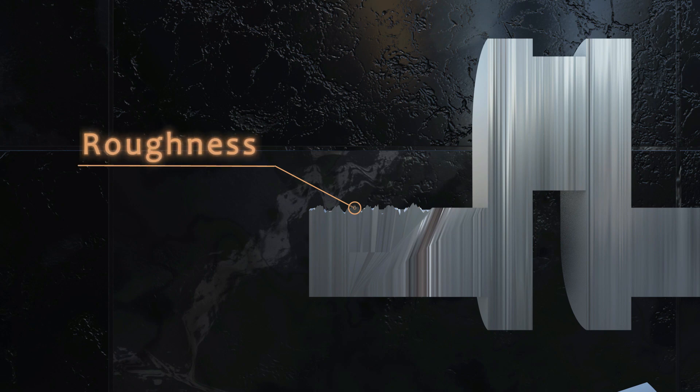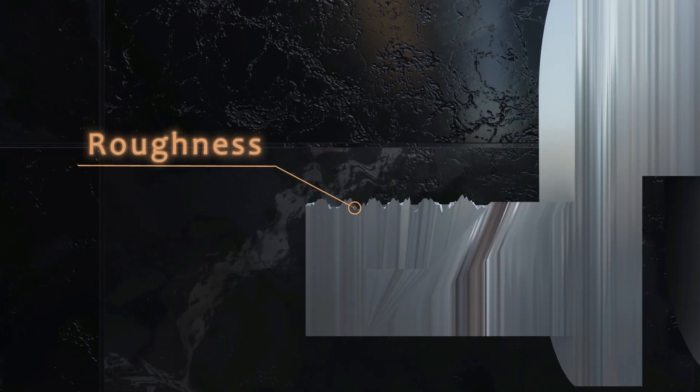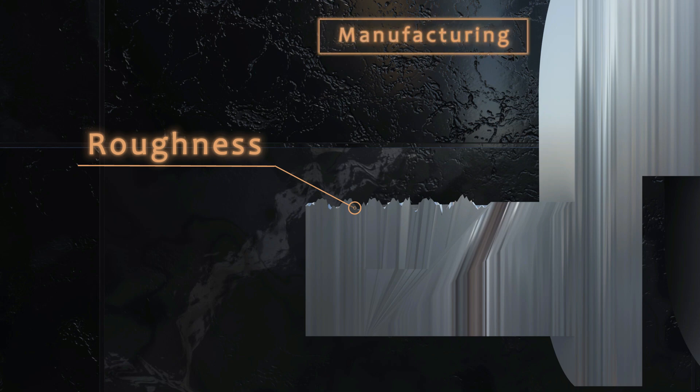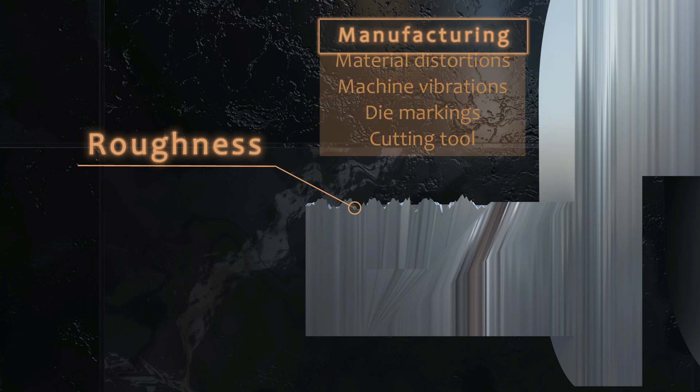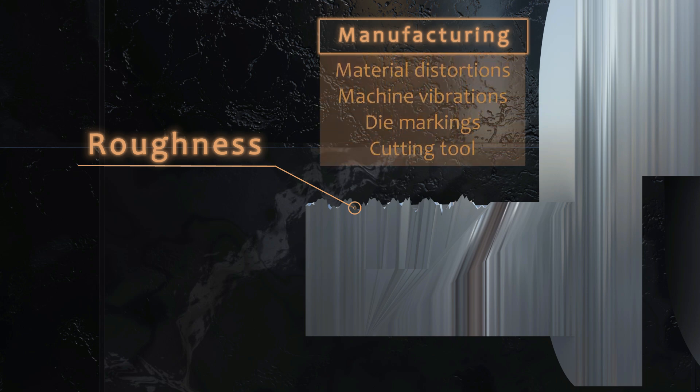If we zoom in close enough, these will look like mountains and valleys. These are caused by markings of the cutting tool or the die that was used to manufacture the part, but also due to vibrations in the machine or even distortions in the material matrix due to the heat treatment.